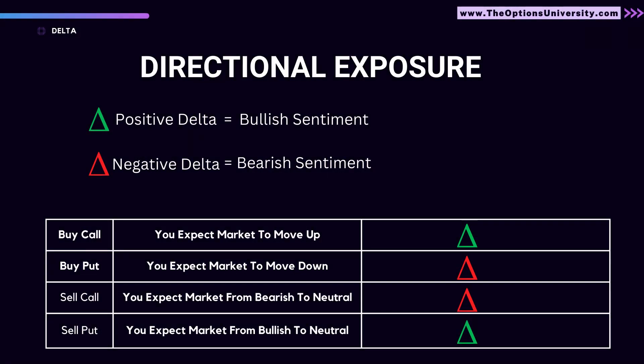Moving on to directional exposure — you'll see two types of delta: positive delta and negative delta. Positive delta indicates that the directional exposure is bullish. Negative delta indicates a bearish sentiment. As a call buyer, you want the market to move up, so you will have a positive delta. As a put buyer, you expect the market to move down, so your delta would be negative.